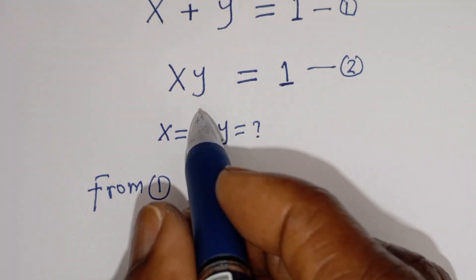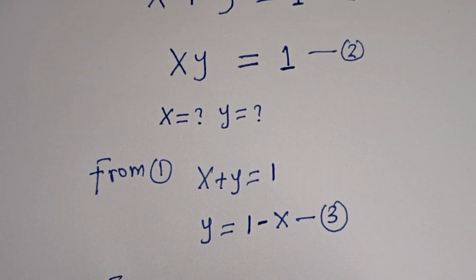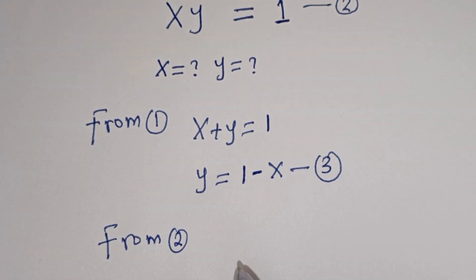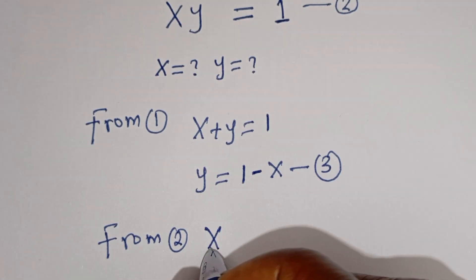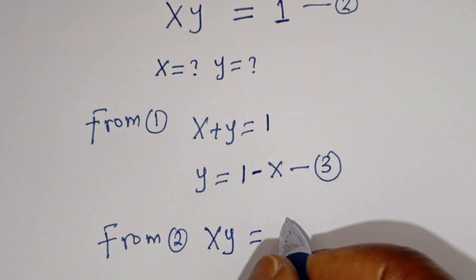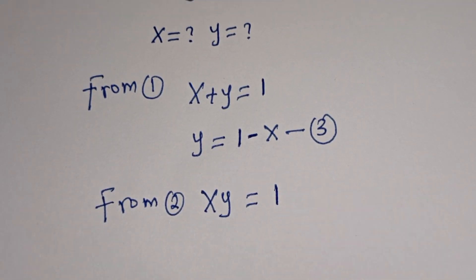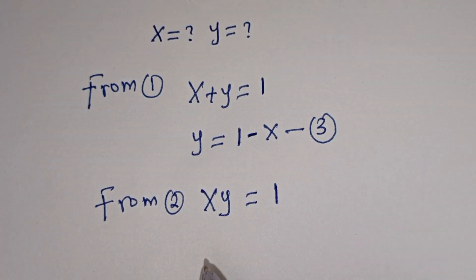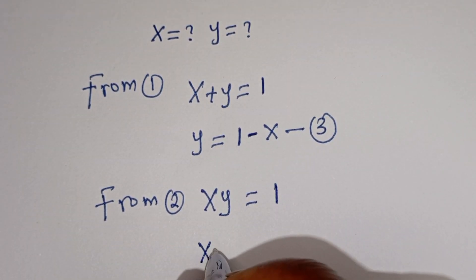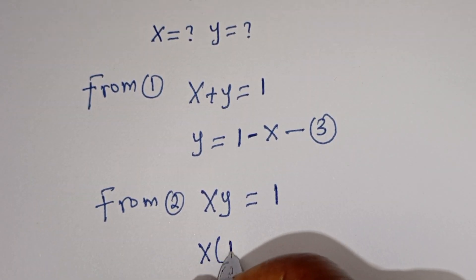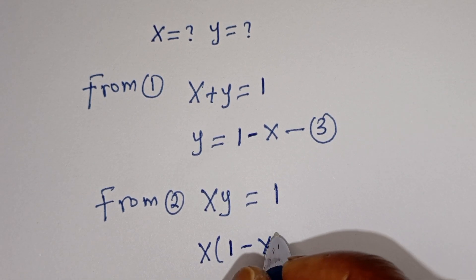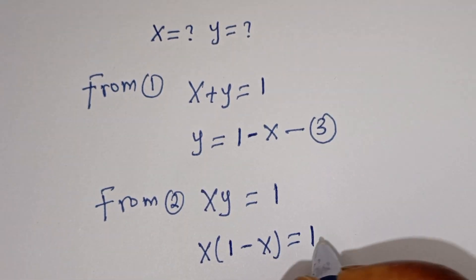And from equation 2, x times y is equal to 1. Let's substitute for y. We have x times bracket 1 minus x is equal to 1.